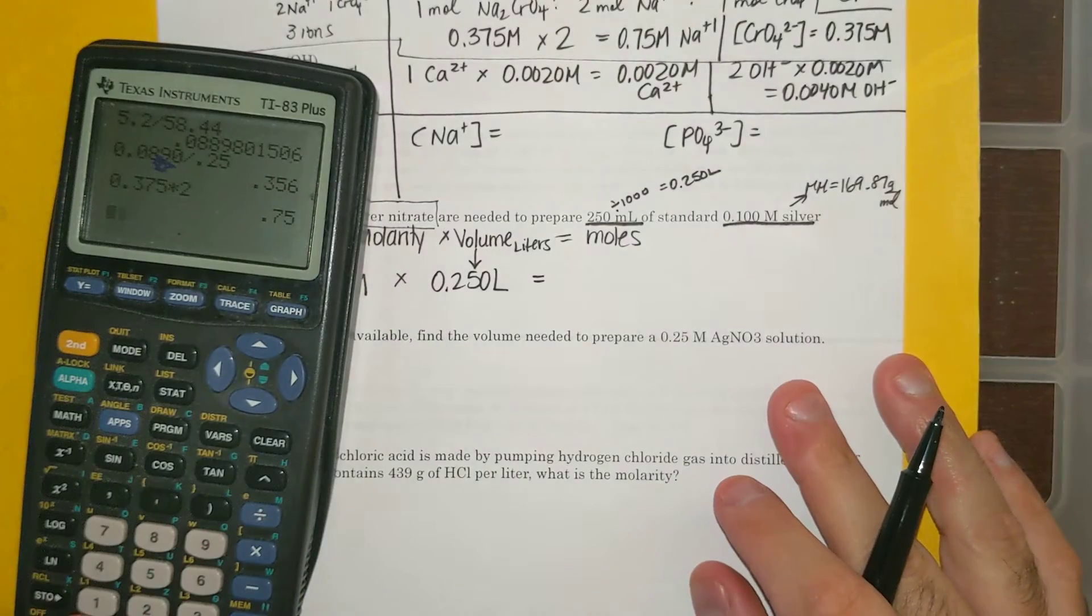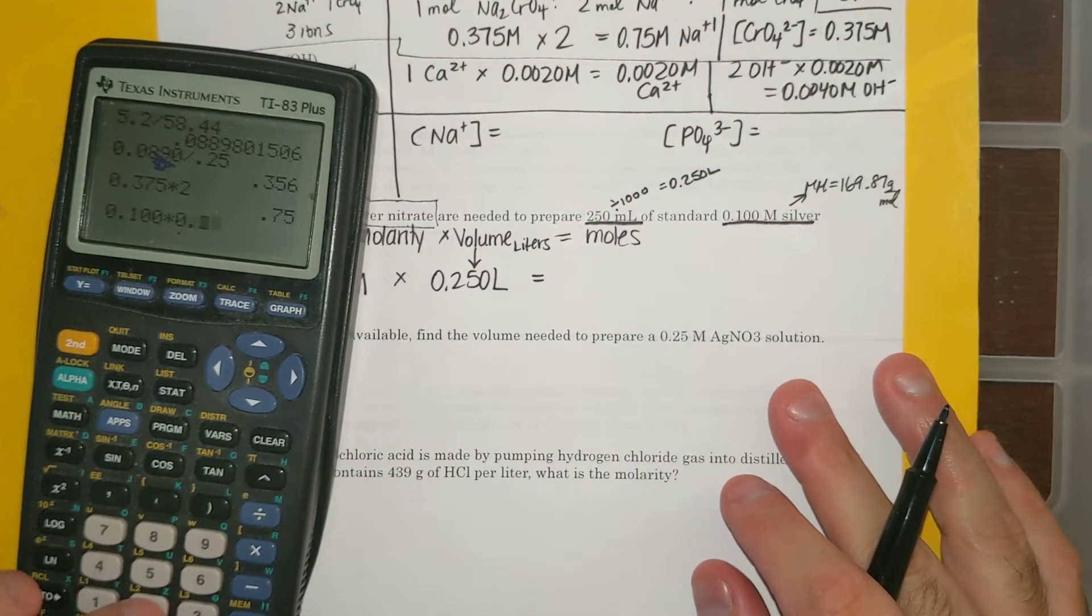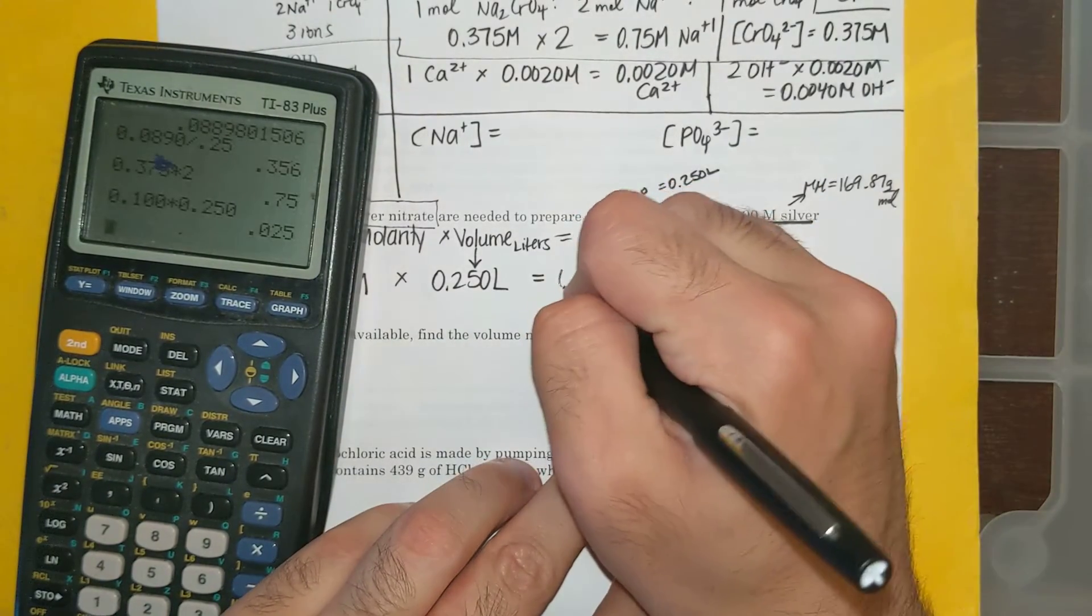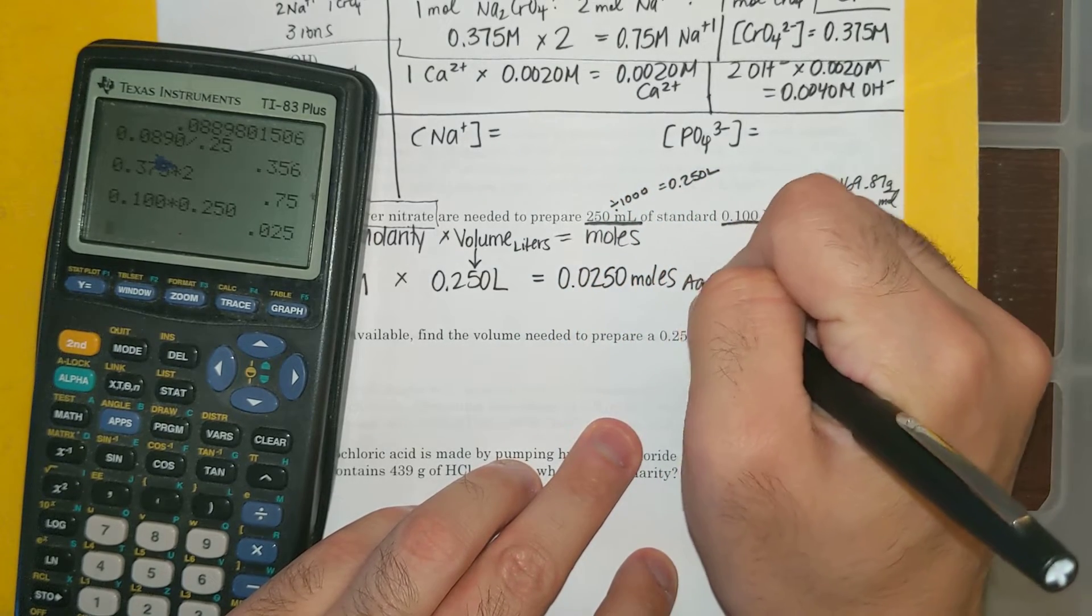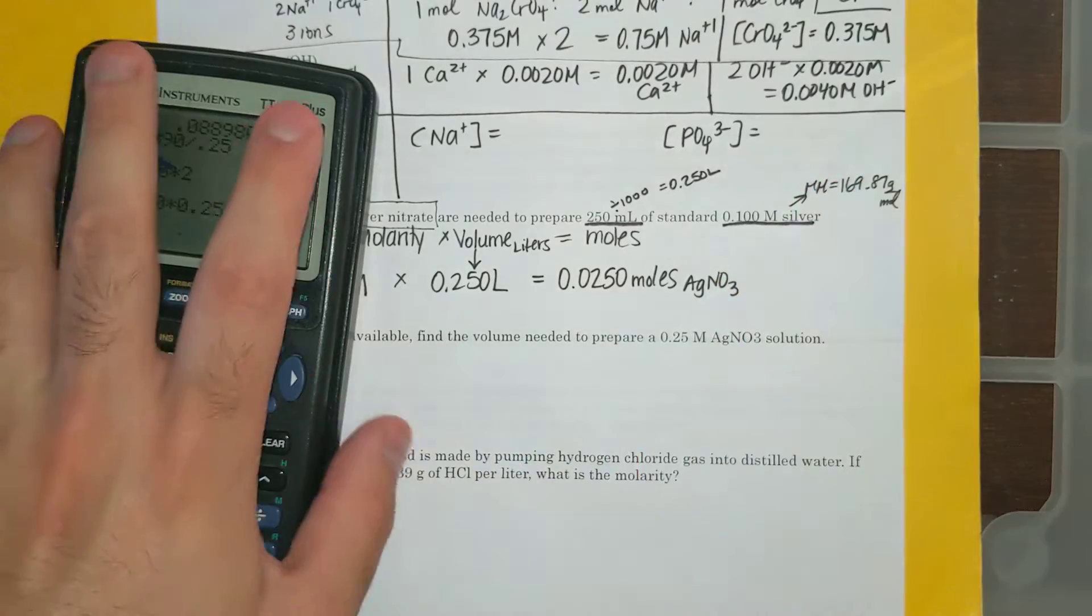And if I multiply these two, 0.100 times 0.250, I get 0.0250 moles of AgNO3. All right.